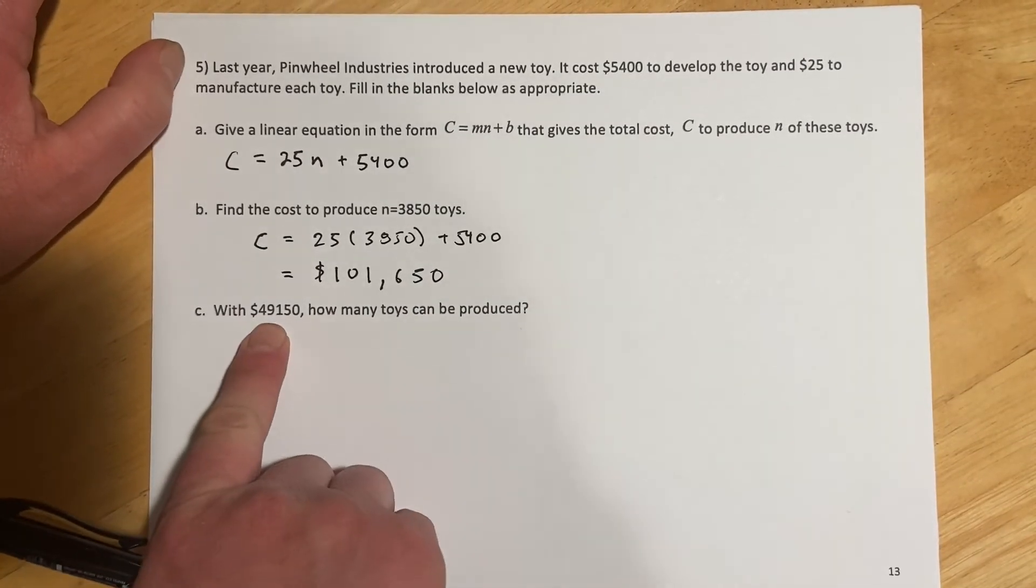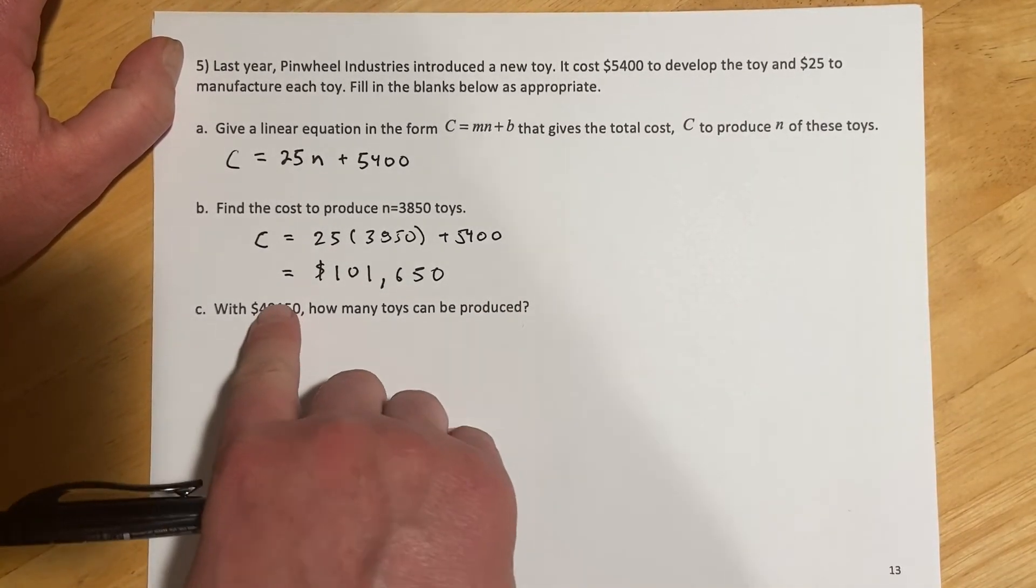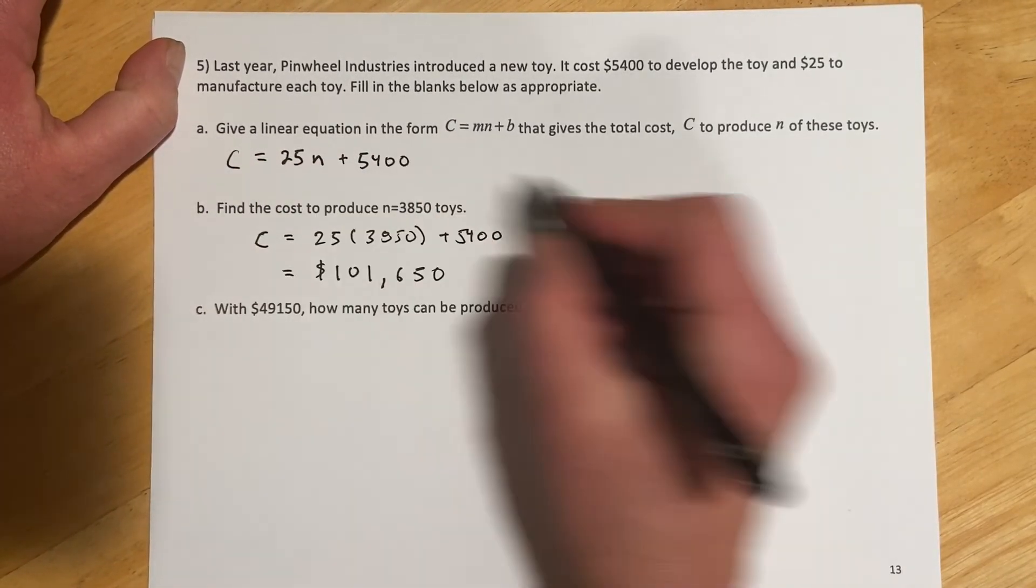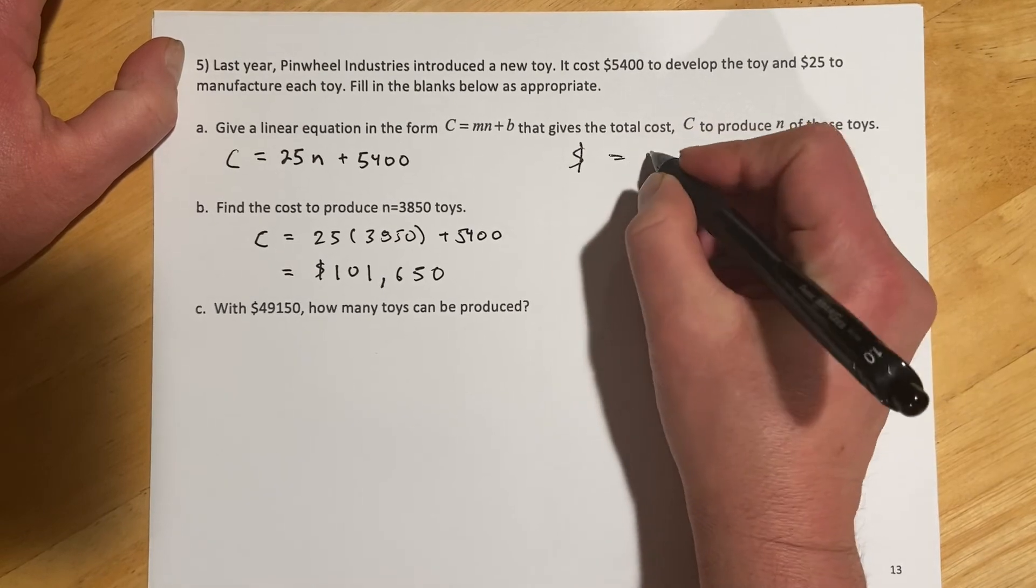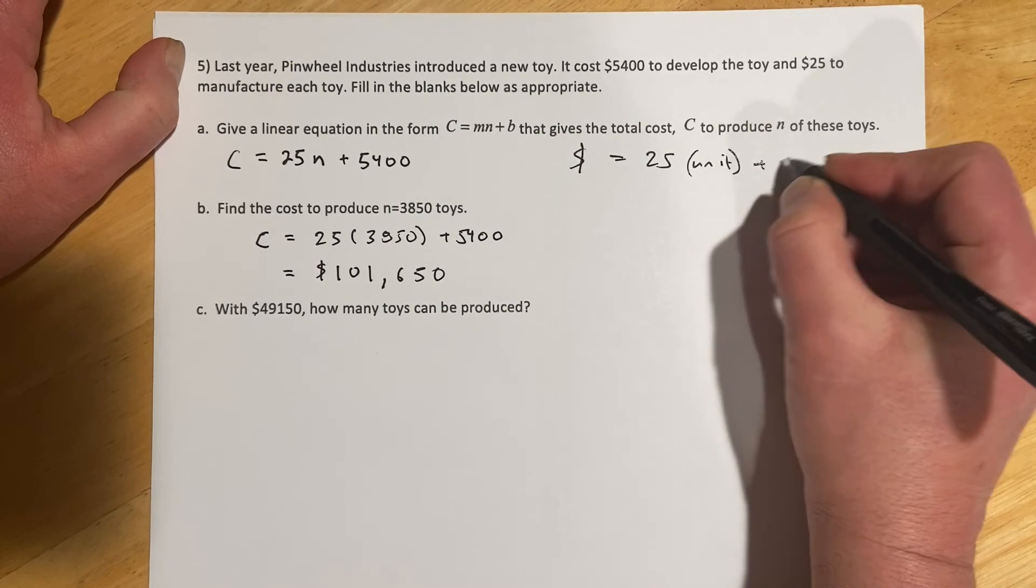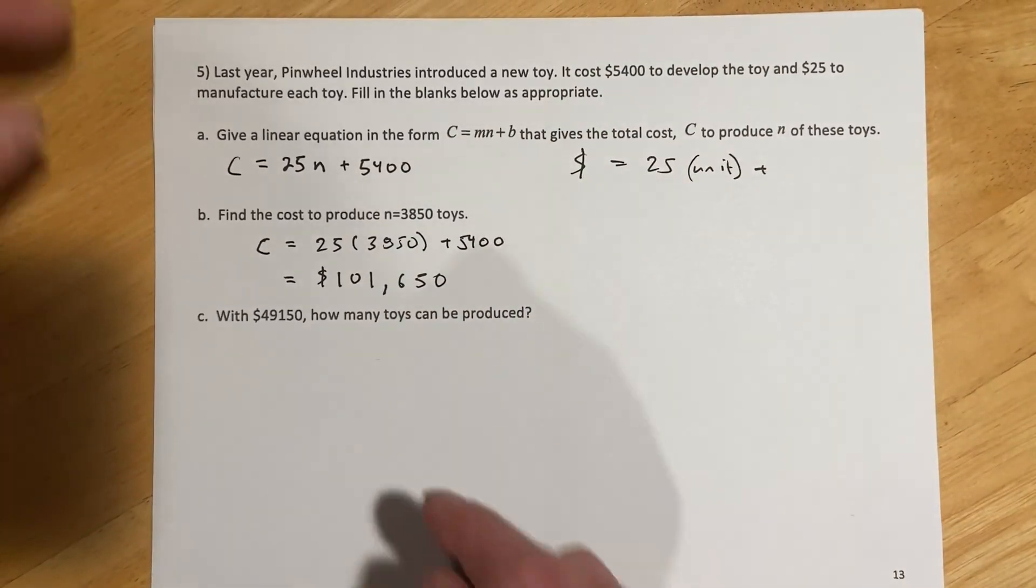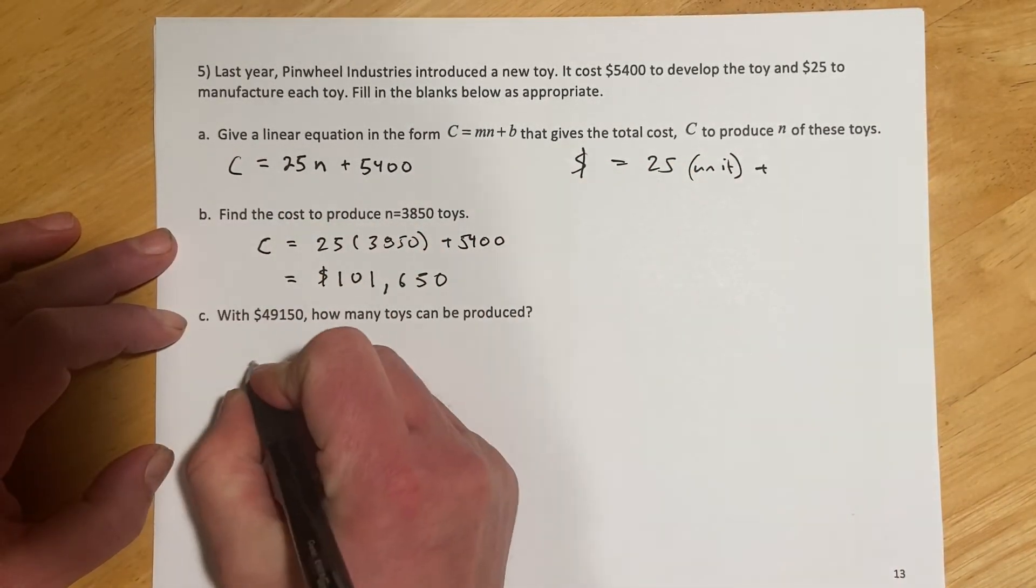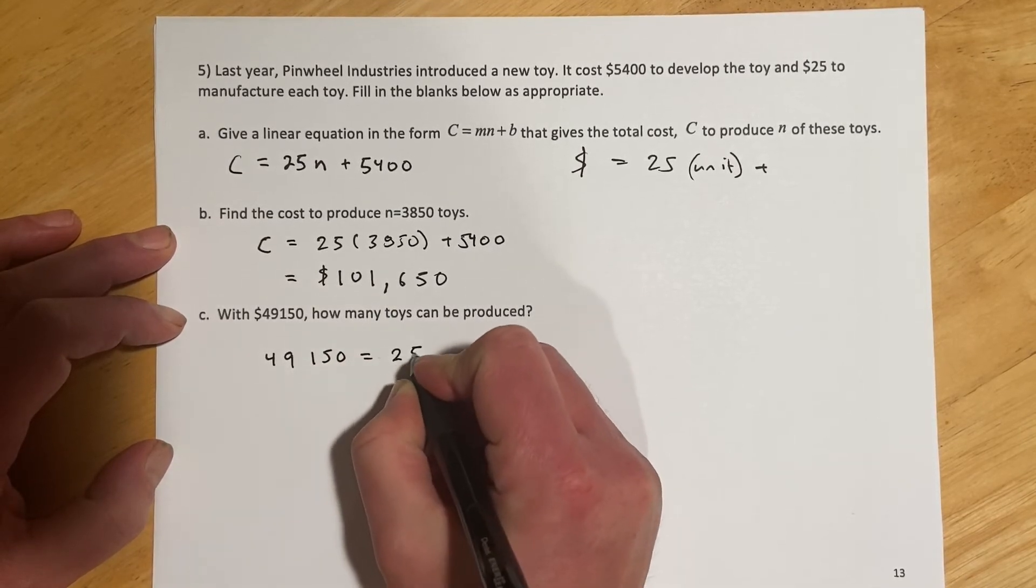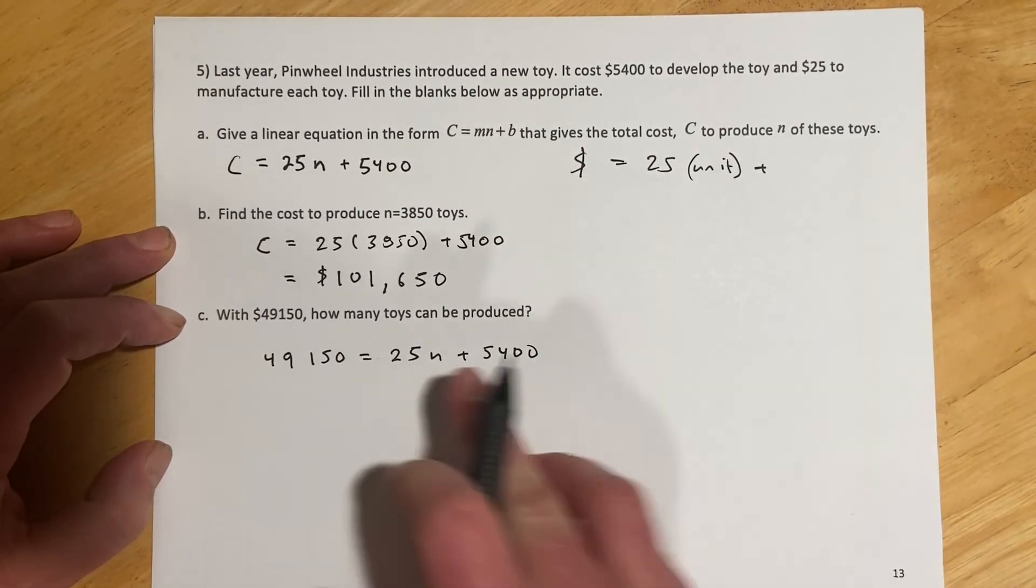And then with $49,150, how many toys could be produced? So this is money, that's not units, that's cost. So remember with this equation, we're getting out dollars, and it's saying $25 times the number of units plus the $5,400. So this is dollars coming out, units going in. So when we get dollars out, that's our cost side. So $49,150 equals $25N plus $5,400. And so now we're solving for N.